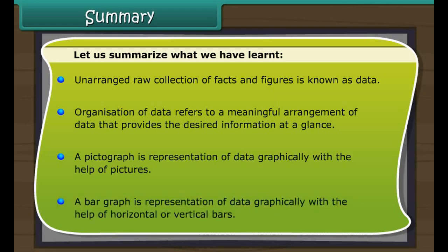Self-assessment: Read the information given by the pictograph carefully. Drag the items of column B and drop them on the corresponding items of column A. Summary: Unarranged raw collection of facts and figures is known as data. Organization of data refers to a meaningful arrangement of data that provides the desired information at a glance. A pictograph is a representation of data graphically with the help of pictures. A bar graph is a representation of data graphically with the help of horizontal or vertical bars.